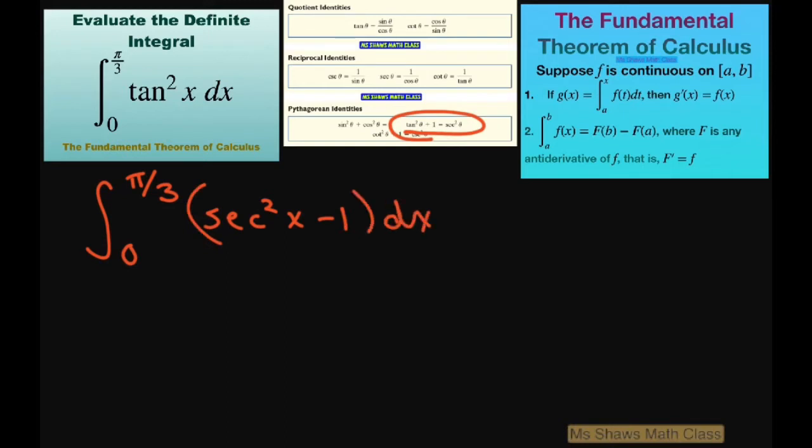Therefore, when you integrate this, the antiderivative of sec²(x) is tan(x), and the antiderivative of one is x. And then we're evaluating this from zero to π/3.